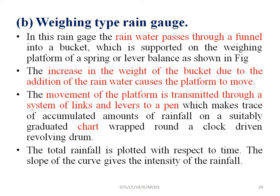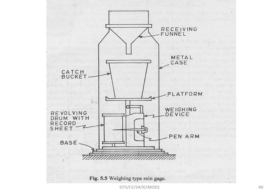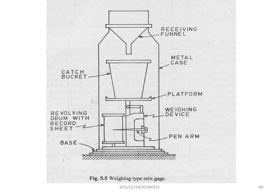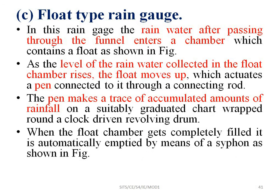The total rainfall is plotted with respect to time, and the slope of the curve gives the intensity of the rainfall. The chart shows the accumulated rainfall curve over time.